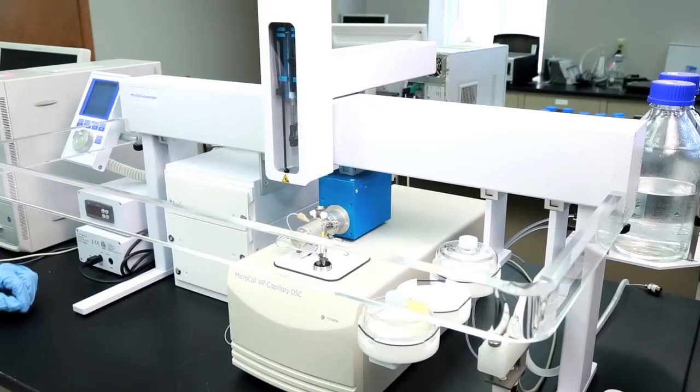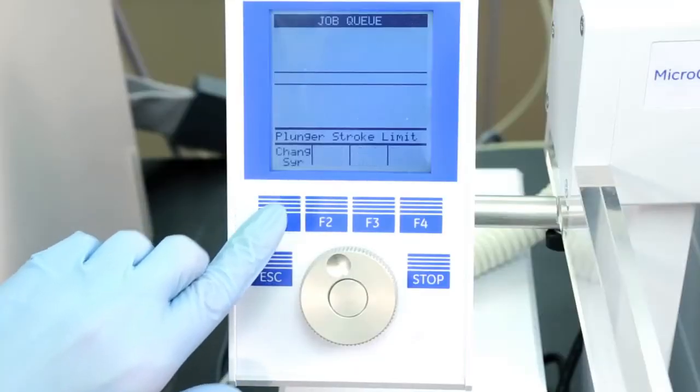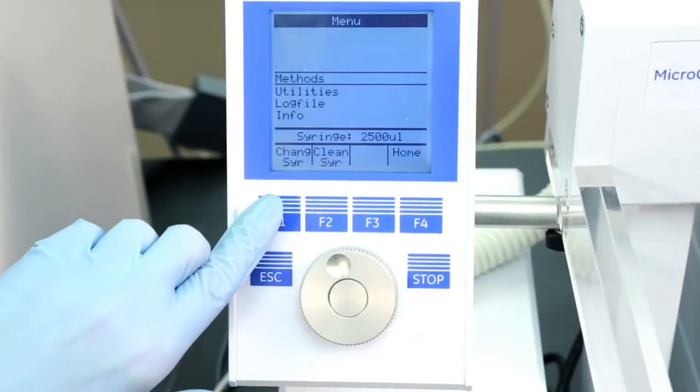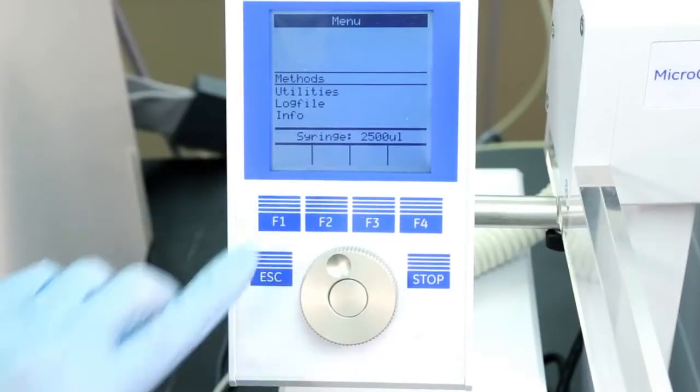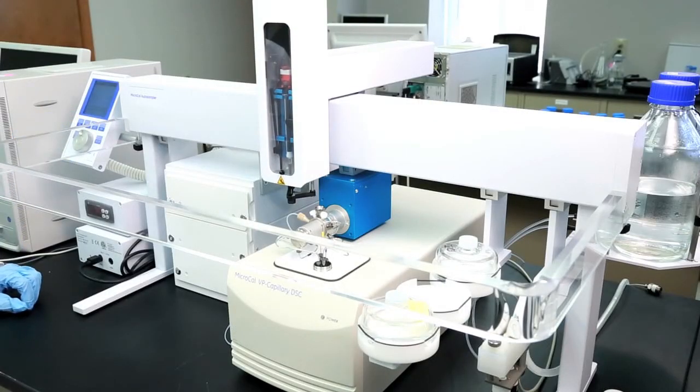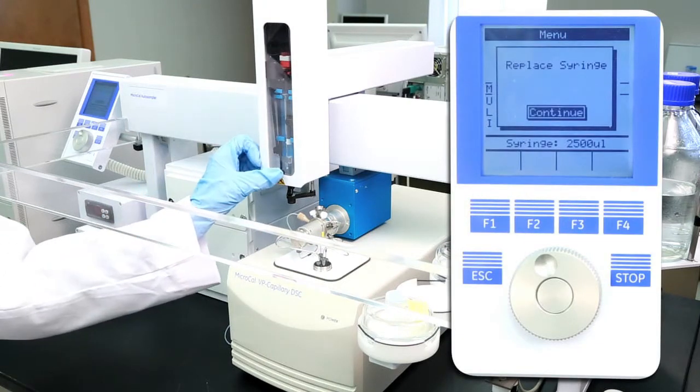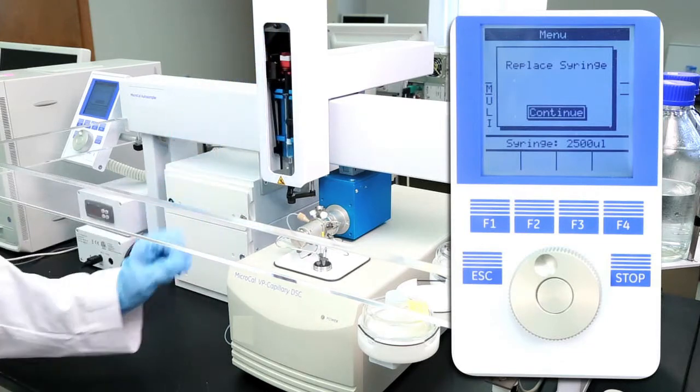To remove the syringe you first have to get it in the appropriate position. Press F1 on the console of the auto sampler and then F1 again to change syringe. The syringe will then move to a position where you'll be able to remove it. You open up the sliding door to access it.